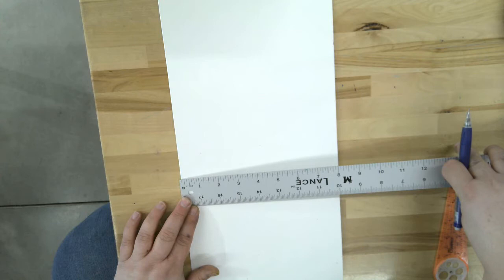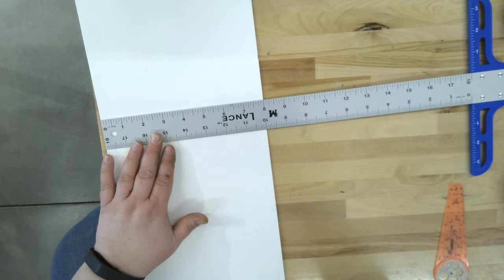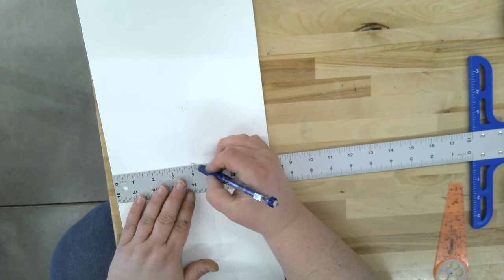So you're going to mark the halfway point, which is four, with your pencil. And I'm going to do that in two spots so I get a nice straight line.